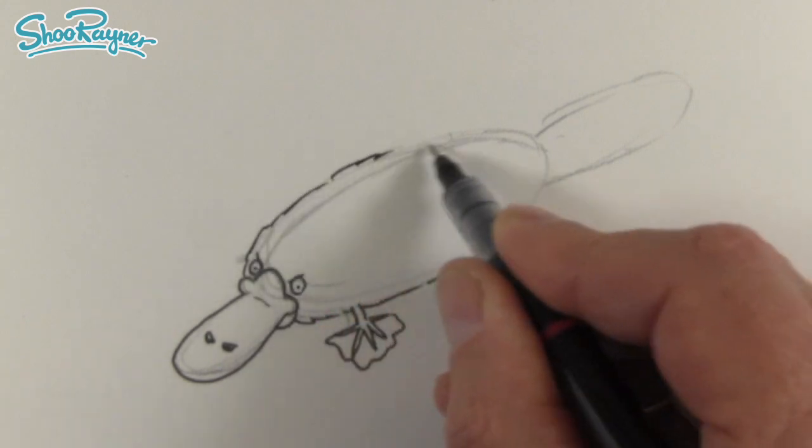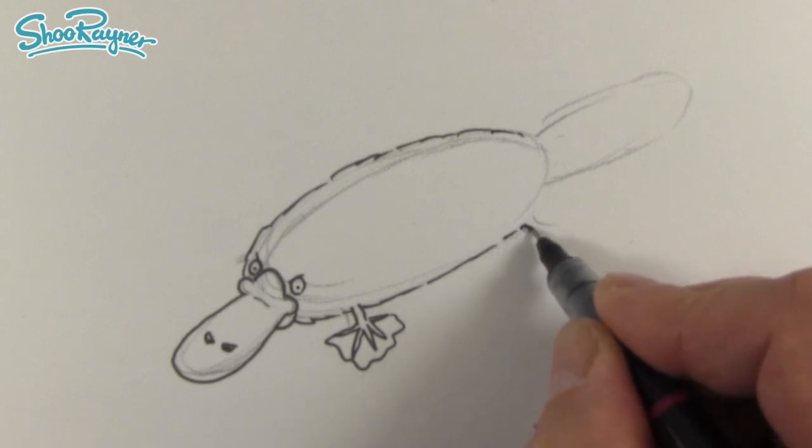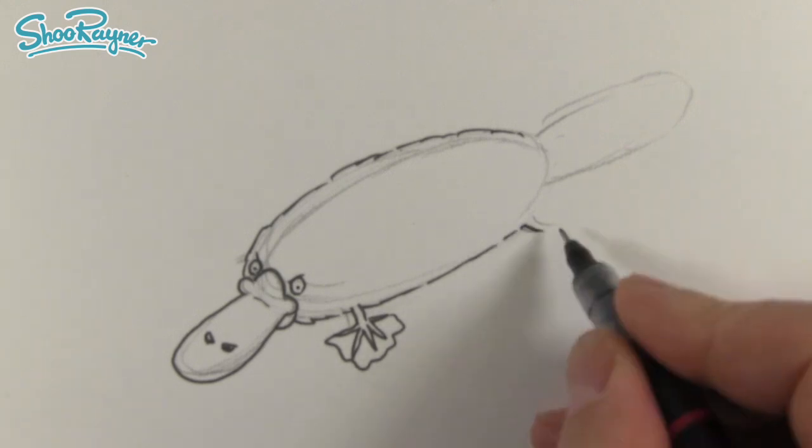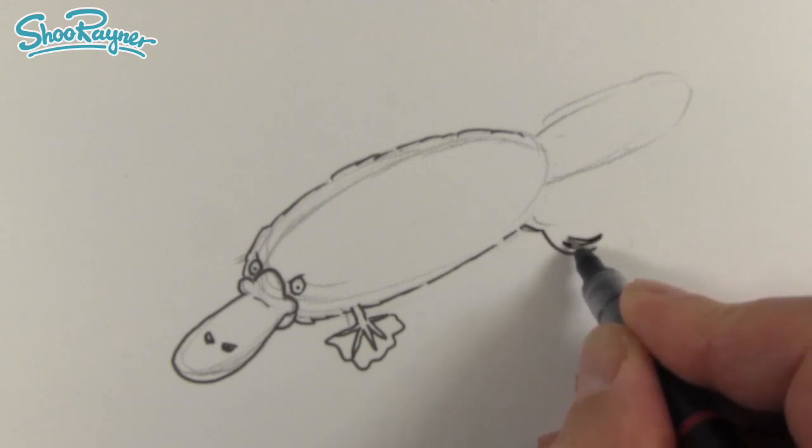Then we want to do kind of a furry line all the way down to there and then here we're going to have the back leg and these are different. These are more like digging, kind of powerful things.